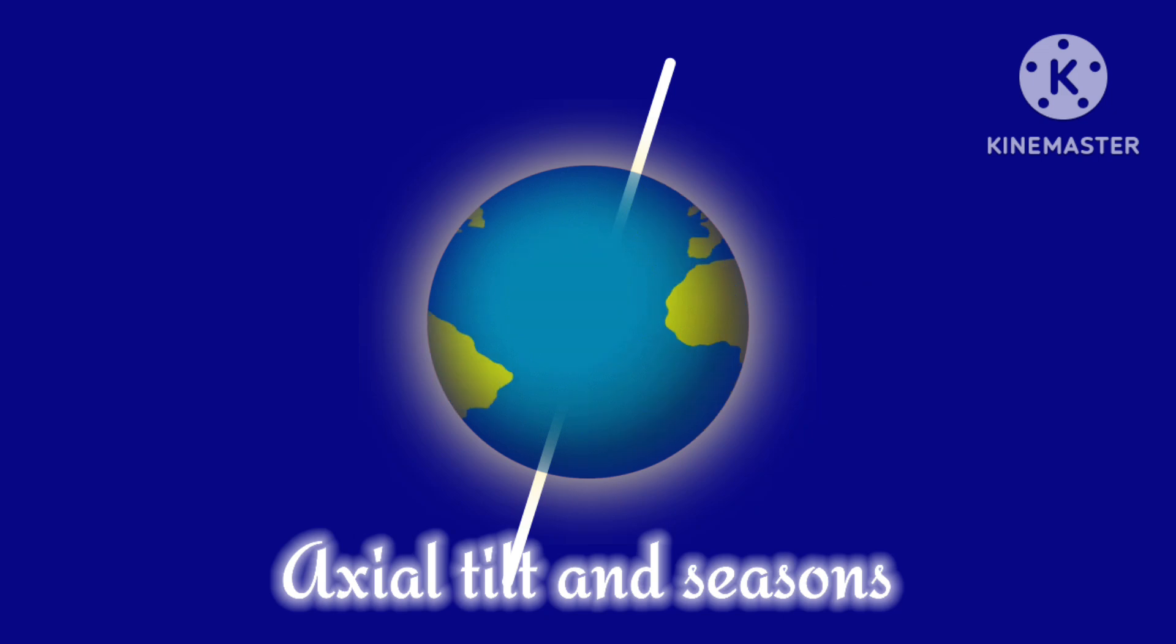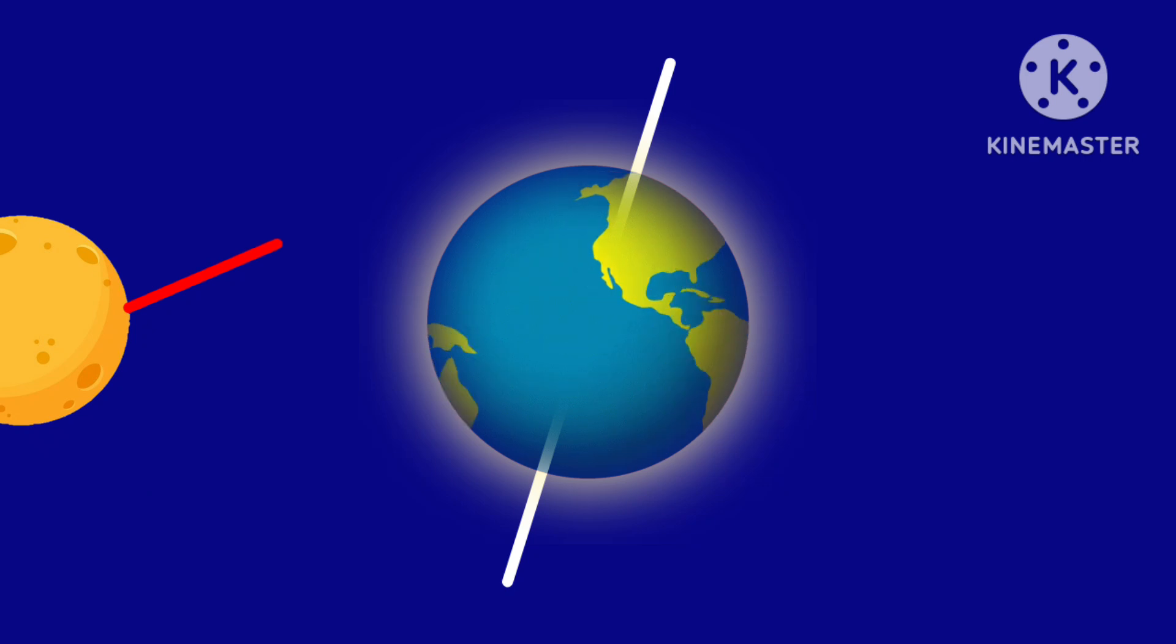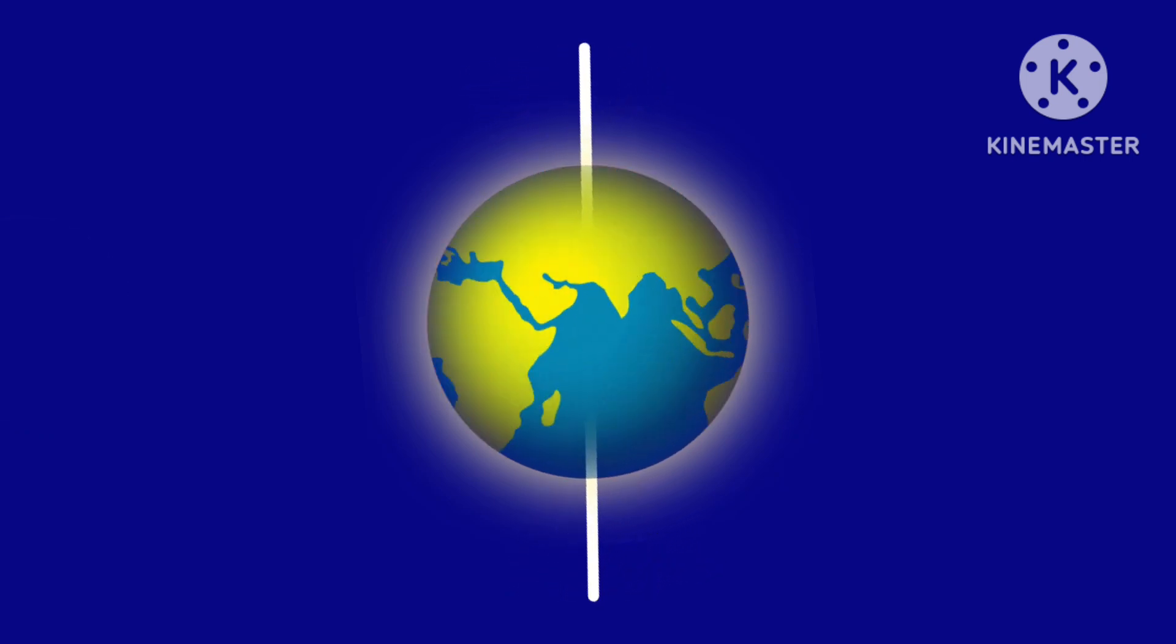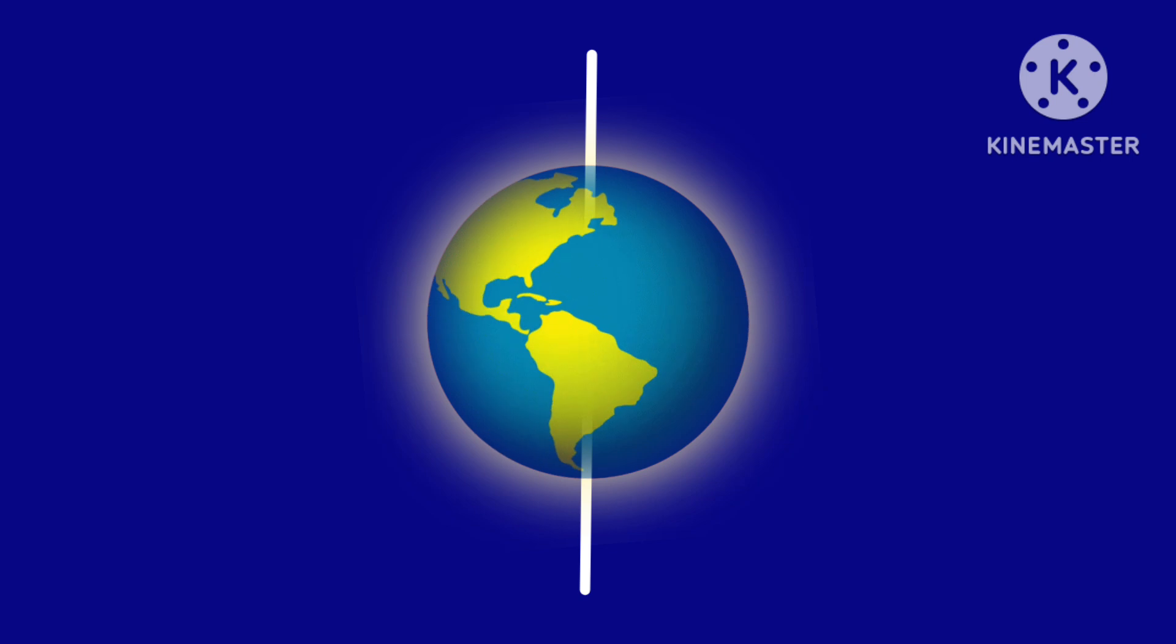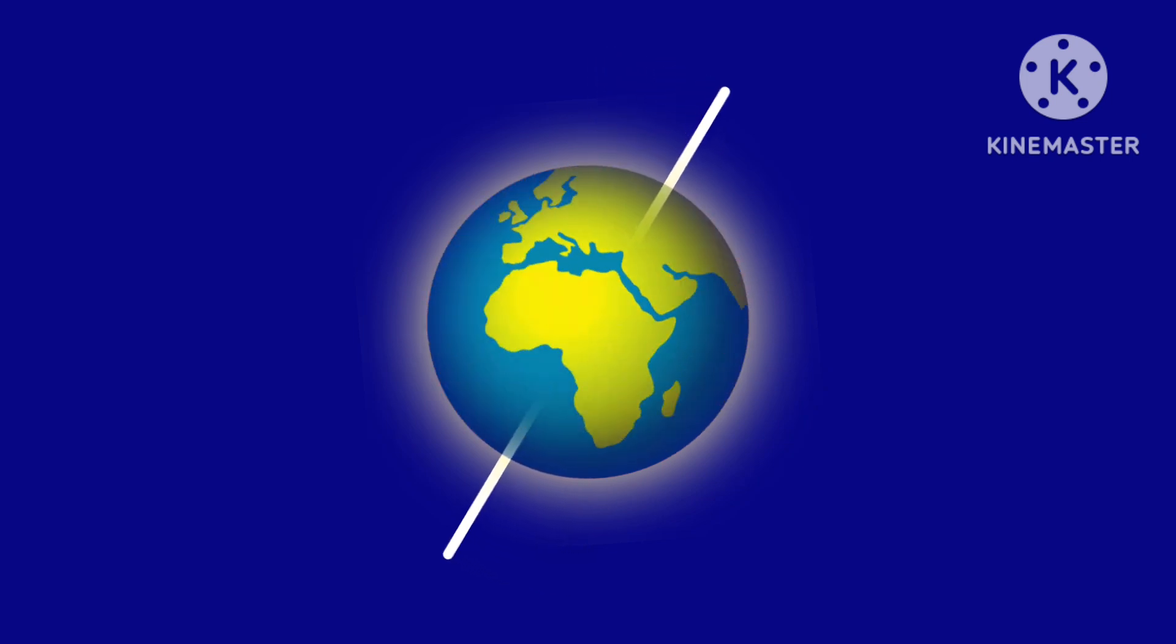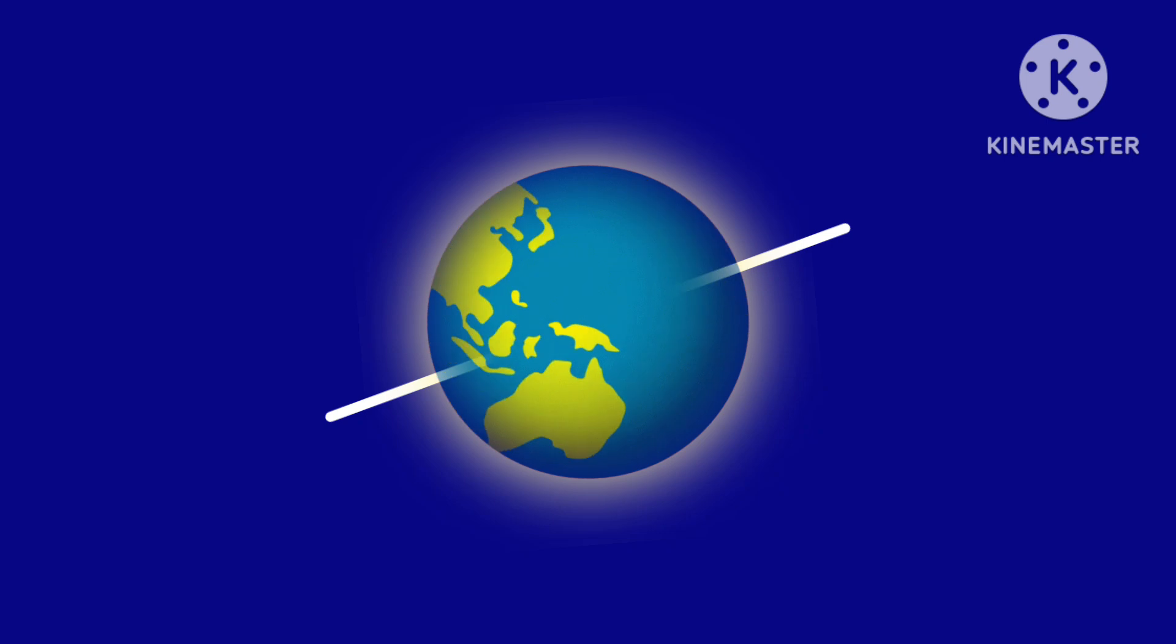Absence of moon also affects axial tilt and seasons. The moon stabilizes Earth's axial tilt at about 23.5 degrees, which is responsible for our seasons. Without the moon, this tilt could wobble chaotically, leading to extreme and unpredictable climate shifts, with periods of no tilt and no seasons, or periods of extreme tilt causing permanent heat or darkness in some regions.